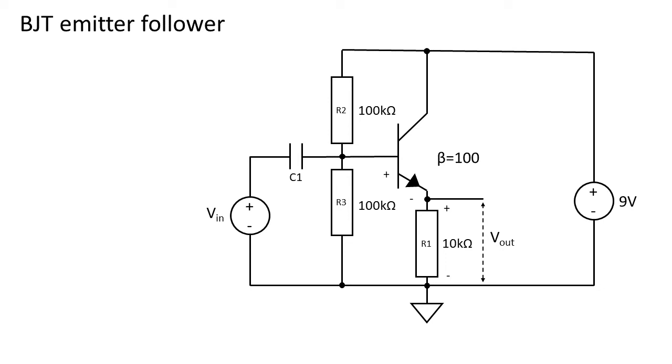Now C1 and a parallel combination of R2 and R3 form a high pass filter. We want to choose the value of C1 so the cutter frequency is outside the audio range. The formula for the cutter frequency is 1 over 2 pi times R2 parallel to R3 times C1.